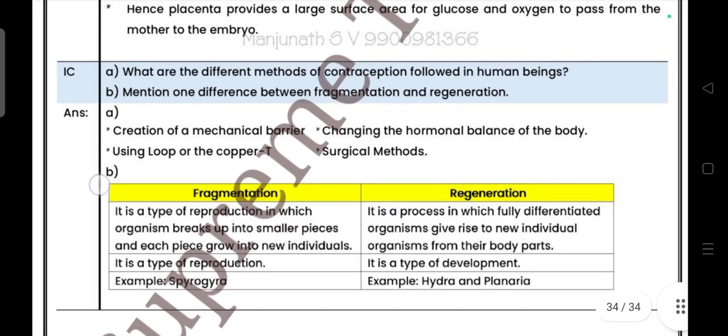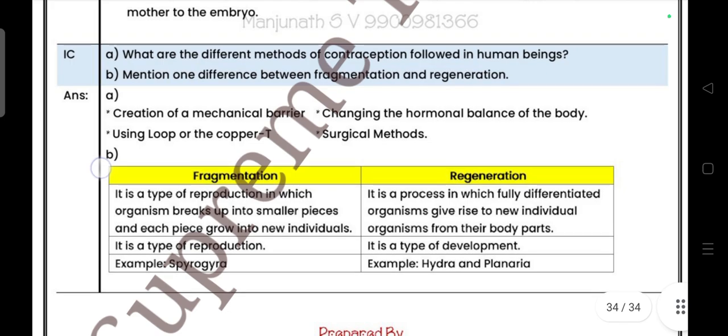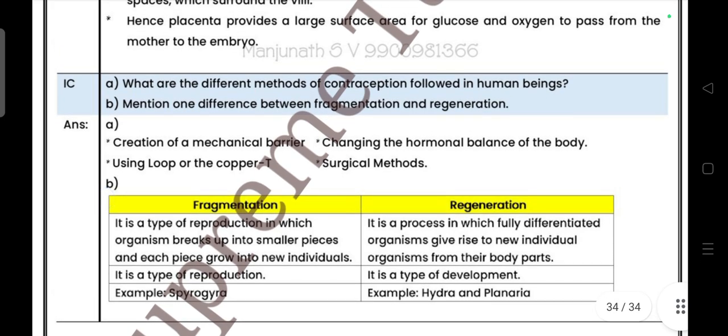Last question: What are the differences between the contraception methods followed by human beings? Mention one difference between fragmentation and regeneration. So this is your science question paper set 4. Thanks for watching, bye bye.